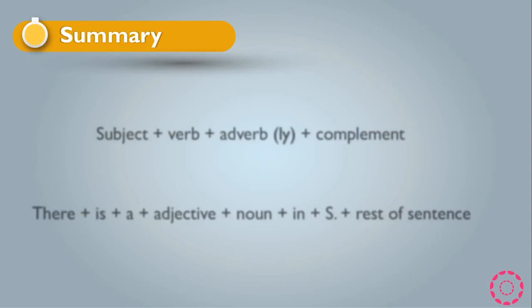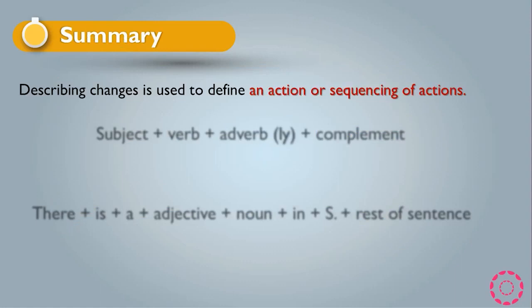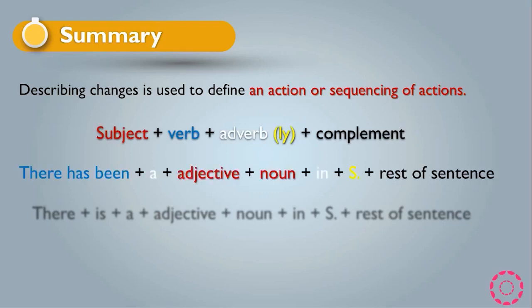This is all about describing change. In summary: describing change is used to define an action or sequencing of actions. We have three rules: subject + verb + adverb(-ly) + complement; 'there has been + a + adjective + noun + in + subject + rest of sentence'; and 'there is + a + adjective + noun + in + subject + rest of sentence.' We use these rules according to the demand of the sentence. Thank you very much for listening.